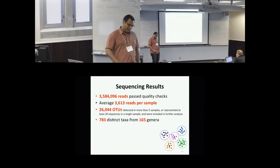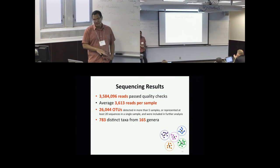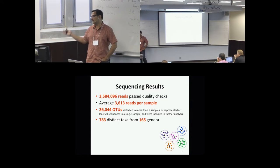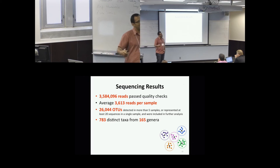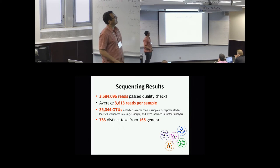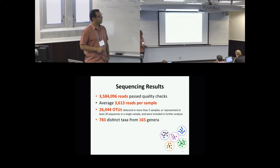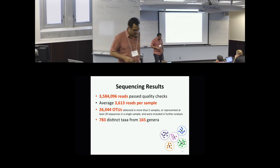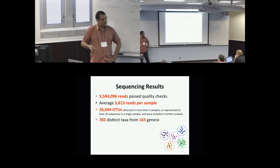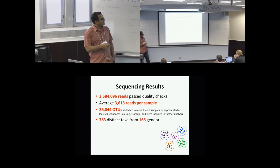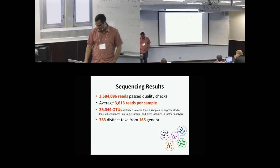So the pipeline that we used to analyze this dataset, and I bring this up because a lot of what I'll talk about in terms of the statistics may be conditioned on that and the generality of that. What we did was essentially we had about 3.5 million reads in total, about 3.6 reads per sample. And we used a binning approach developed by people in Mihai's group to cluster 16S sequences into OTUs, and identified 783 distinct taxa from 165 genera.